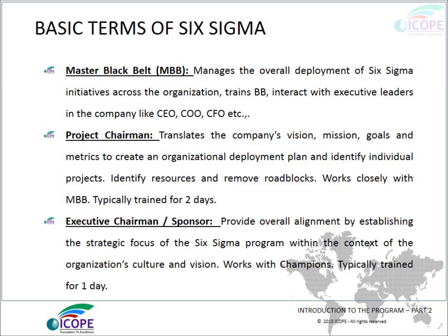The Champion translates the company's vision, mission, goals, and metrics to create an organizational deployment plan, identifies individual projects and resources, and removes roadblocks. Champions work closely with Master Black Belts and are typically trained for two days. The Executive Champion or sponsor provides overall alignment by establishing the strategic focus of Six Sigma within the context of the organization's culture and vision, and is typically trained for one day.